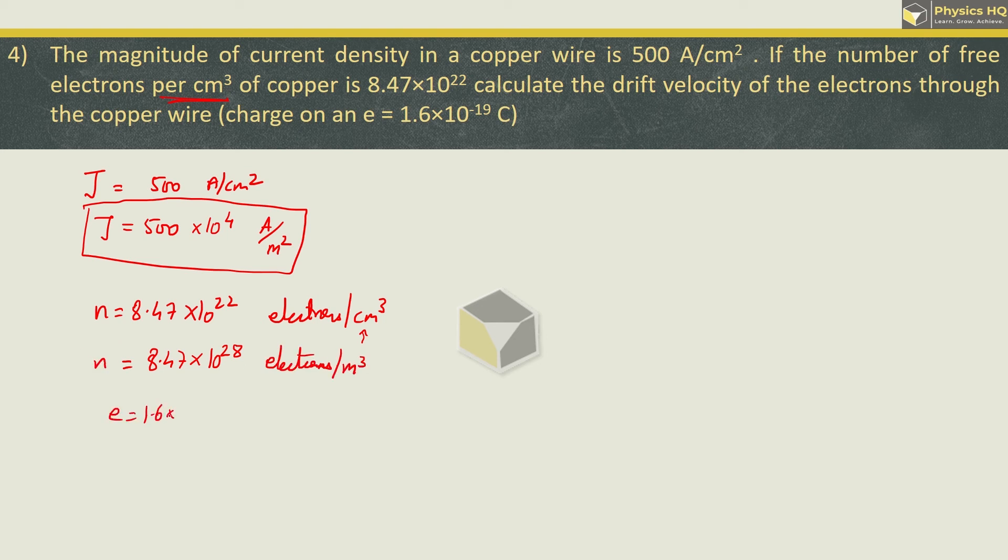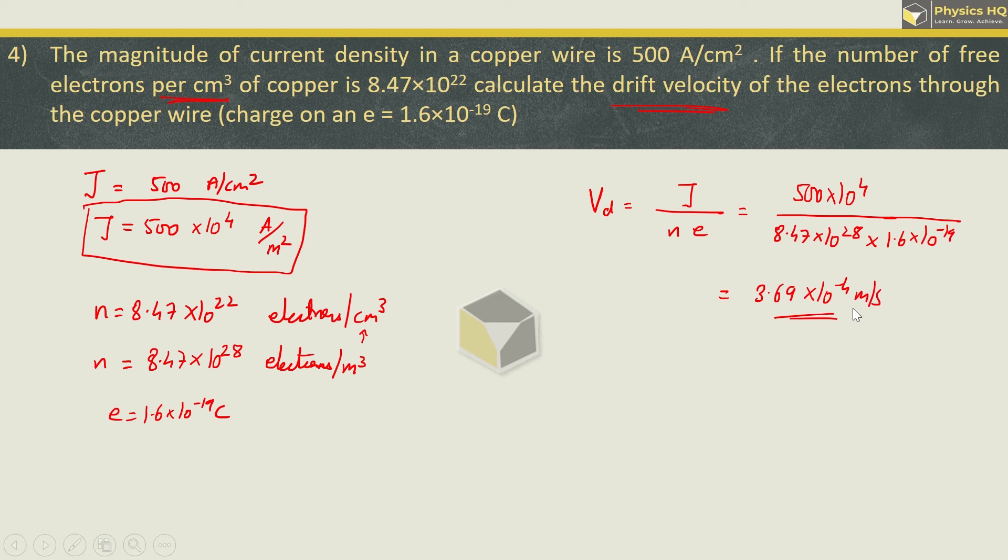E ka value hai 1.6 into 10 raise to minus 19 coulomb. And we are supposed to find out the drift velocity. Drift velocity is given by current density divided by N into E. Current density is 500 into 10 raise to 4 divided by 8.47 into 10 raise to 28 into 1.6 into 10 raise to minus 19. We will get the answer as 3.69 into 10 raise to minus 4 meter per second. Next sum.